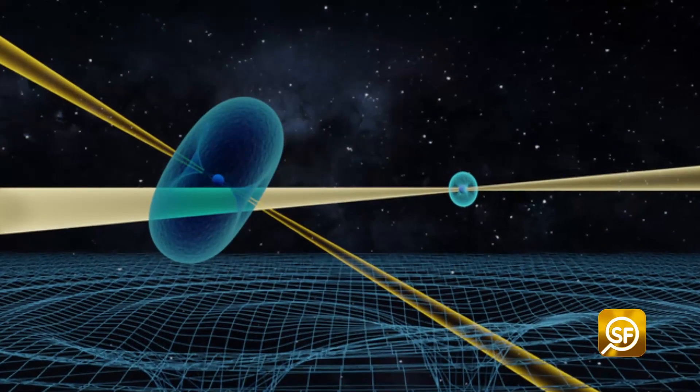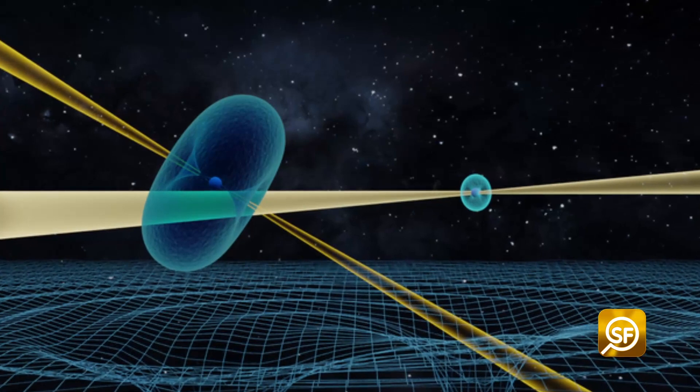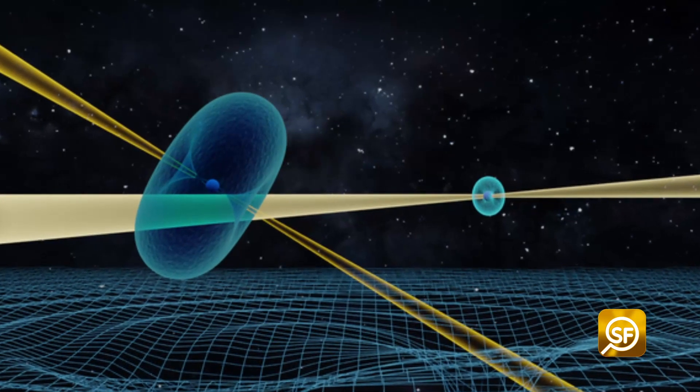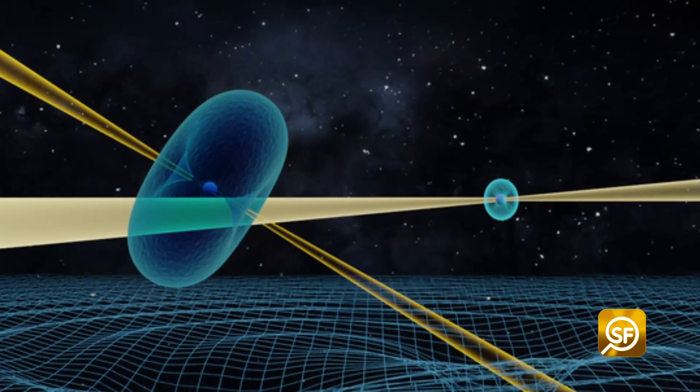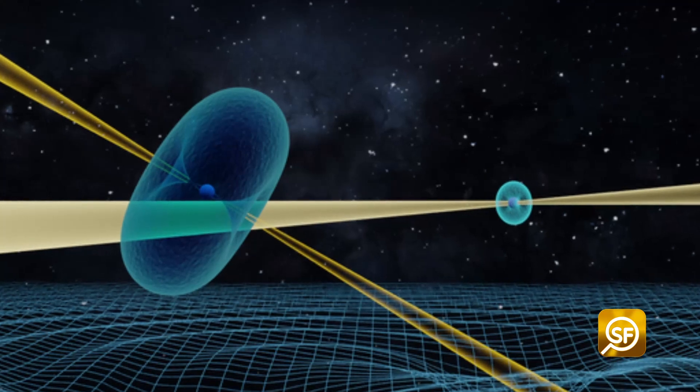The extreme stars are part of a rare double pulsar system with one of the stars spinning about 44 times per second and its companion star rotating about three times per second.